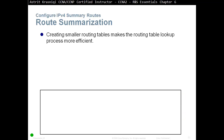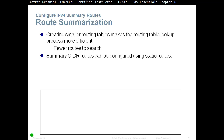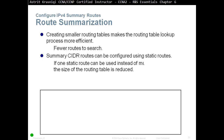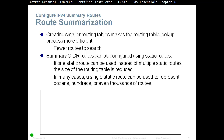Creating a smaller routing table makes the routing table lookup process more efficient with fewer routes to search. Summary — classless inter-domain routing can be configured using static routes. If one static route can be used instead of multiple static routes, the size of the routing table is reduced. In many cases, a single static route can represent dozens, hundreds, or even thousands of routes.